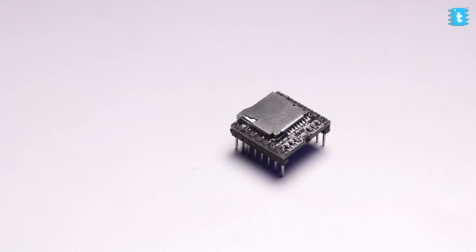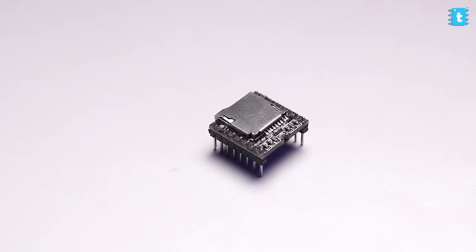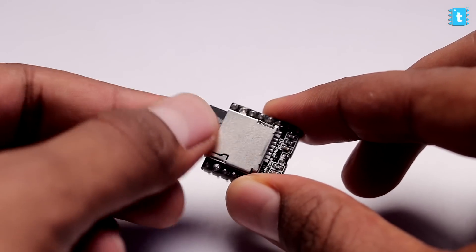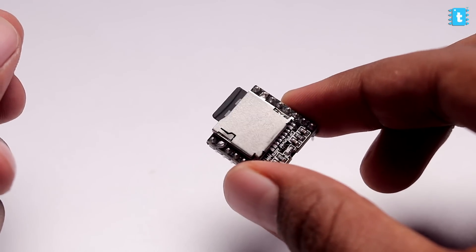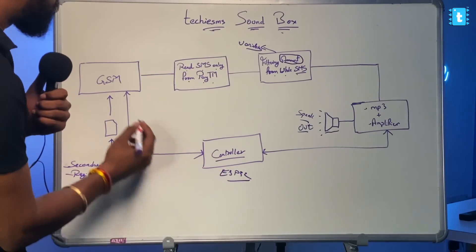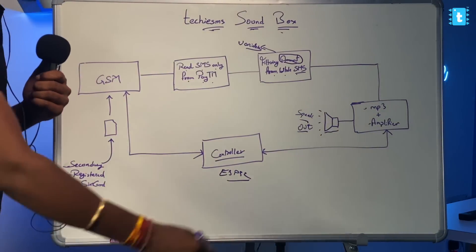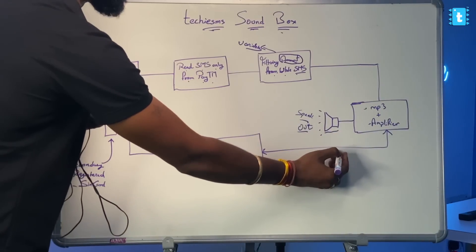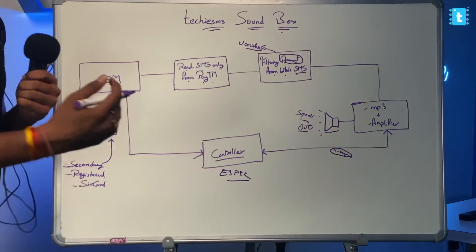Here I have used the DF Mini Player as an MP3 player, and I also attached an amplifier to amplify the sound, and in the end a speaker that will speak out the amount in rupees. Inside this MP3 player, you just need to insert the SD card which contains all the MP3 recordings. As a controller I have used the ESP32 board, which is controlling both the GSM module and the amplifier and MP3 module. We can pass a signal from the controller to say, hey MP3 player, play file number 1.mp3, and it will play that particular file. It's very easy to use, that's why I used it.